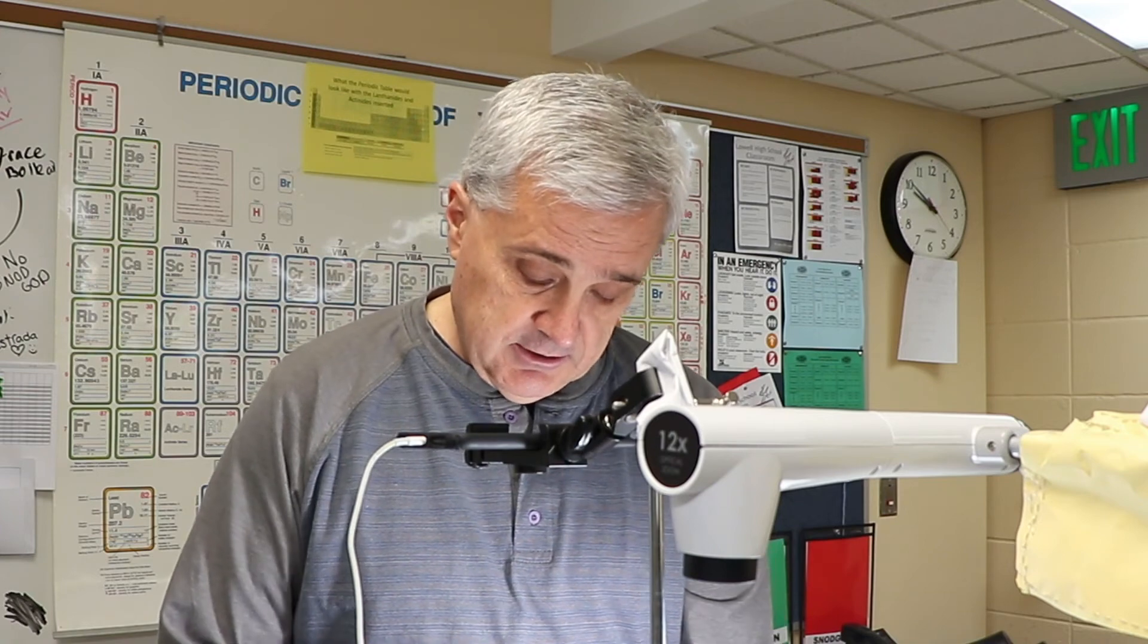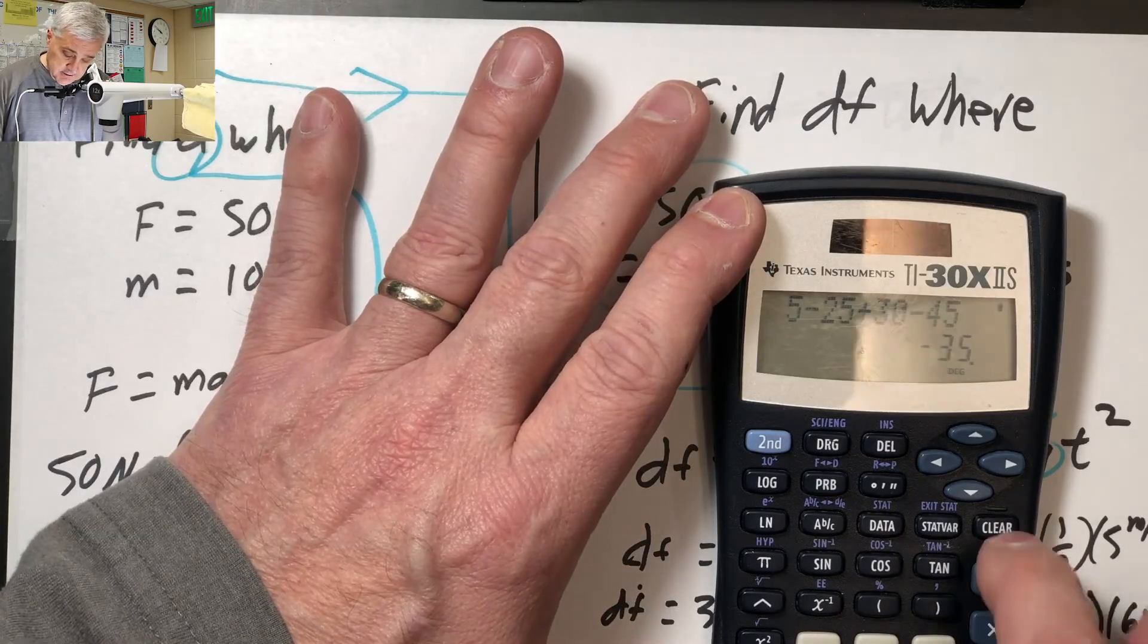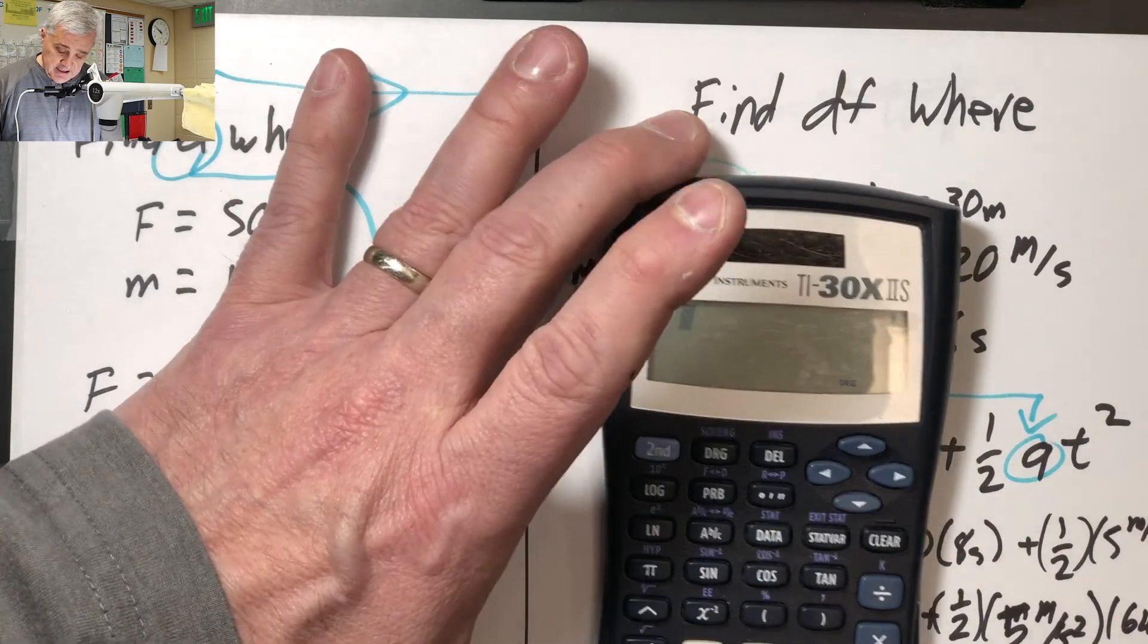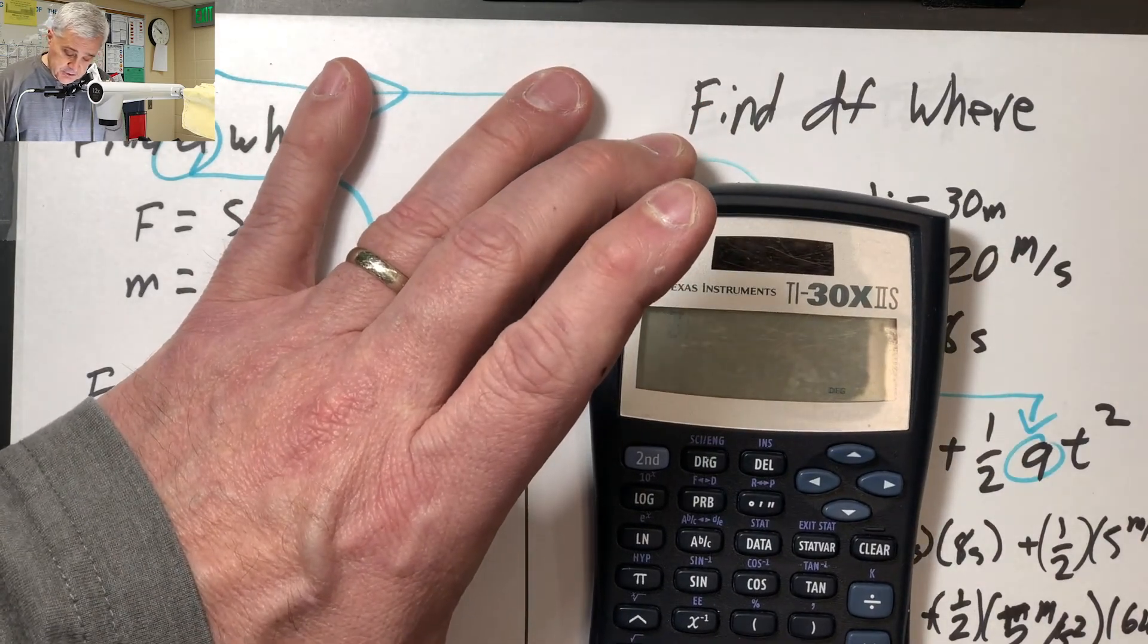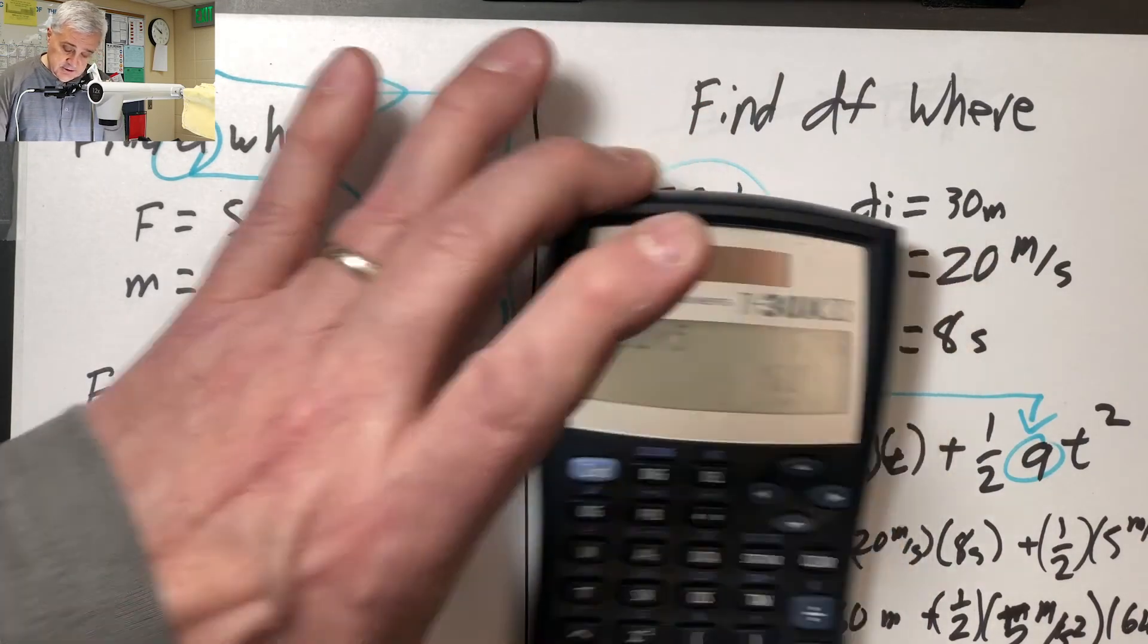So let's try that on the calculator. Let's see, clear. So I have 32 times 5 is 160.